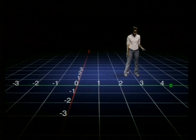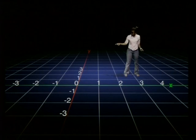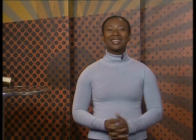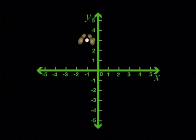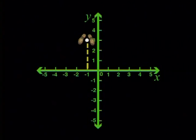Now I get it. So I'm standing on point (3; 2). Can I try another one? Go for it! How about this one? If I trace this point back to the x-axis, its x-coordinate is negative 1. And its y-coordinate is 3. So this is the point (−1; 3).